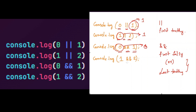Here we are using the AND operator between two truthy values, so this condition applies — it will return the last truthy value, which is 2. So the final output will be 1, 1, 0, and 2.